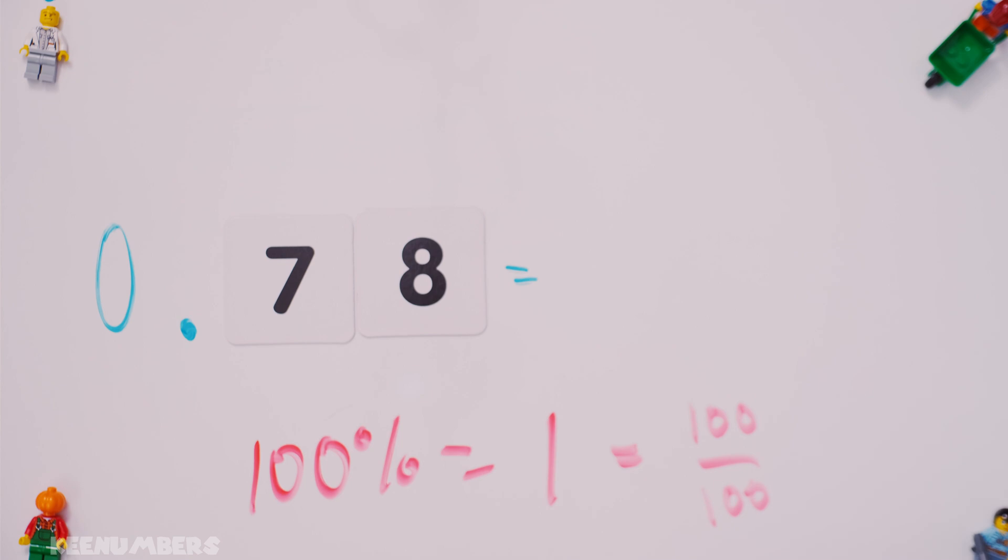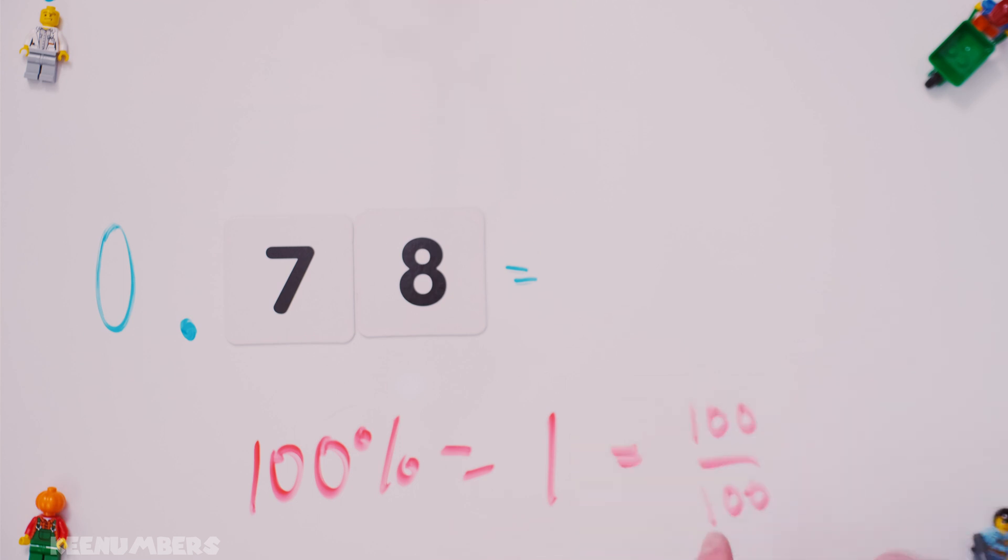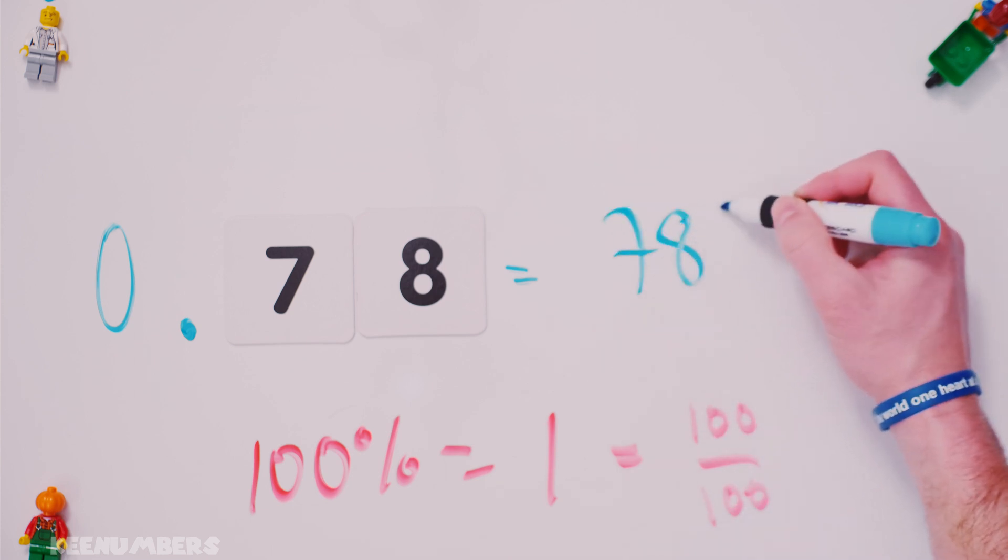0.78. Well, again, there are one hundred percents in one. One hundred percent is equal to one, which is the same thing as a hundred out of one hundred. So, what is .78? Oh, this is easy. This is simply just 78%.